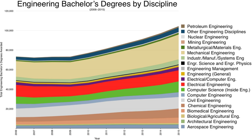PEC interacts with the government at both the federal and provincial level by participating in commissions, committees, and advisory bodies. PEC is a fully representative body of the engineering community in the country and has full signatory status with the Washington Accord.